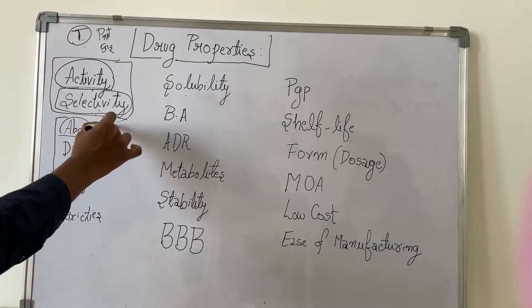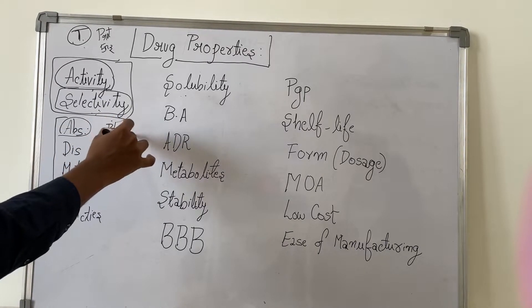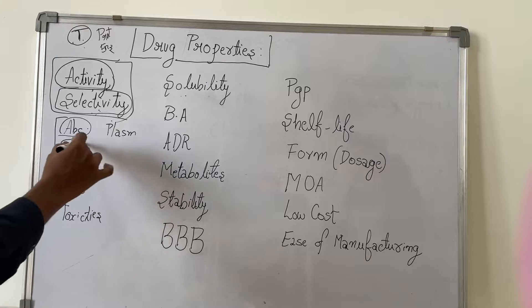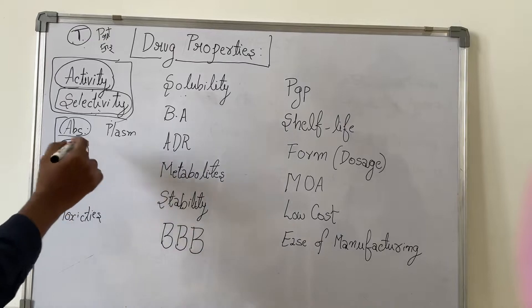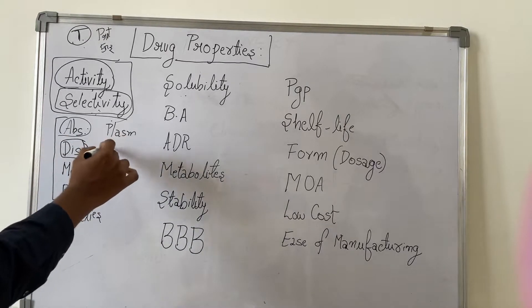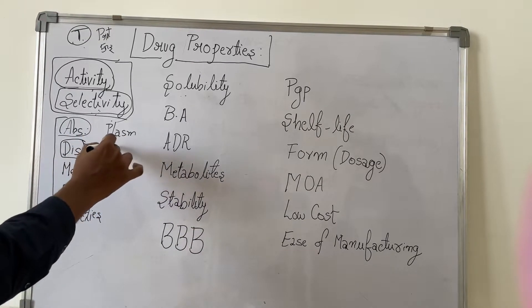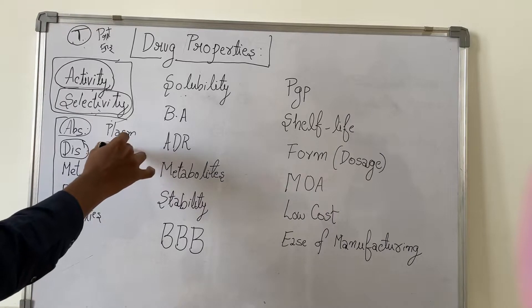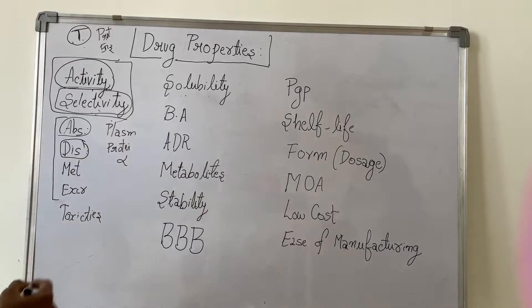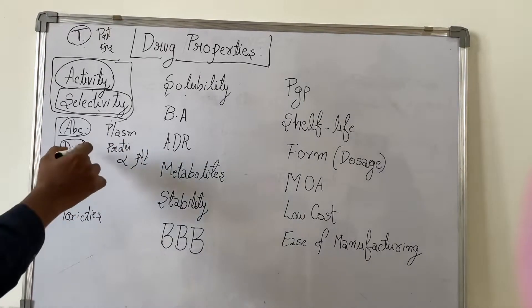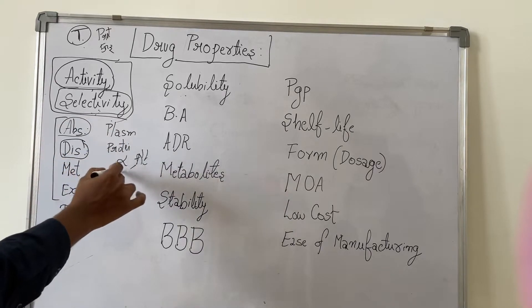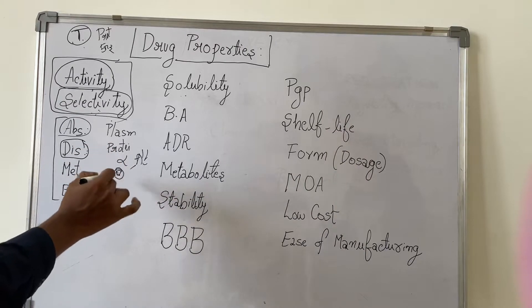We can check distribution also through this pathway using plasma concentration curves. During distribution, what we will study is how the drug is being distributed, how much it is staying in plasma, is it binding to any plasma proteins like alpha acid glycoprotein or albumin. During distribution phase, we will be checking how much the drug is binding, how much it is in the free phase. The amount of drug that is staying freely in the plasma is important to show its efficacy.